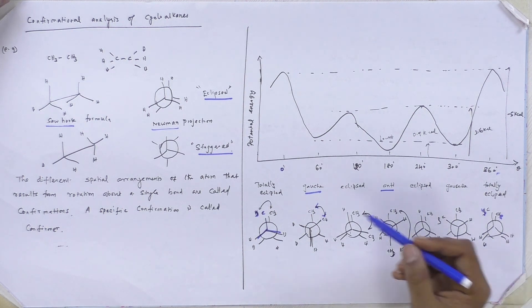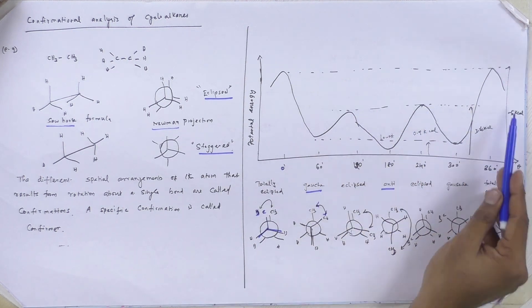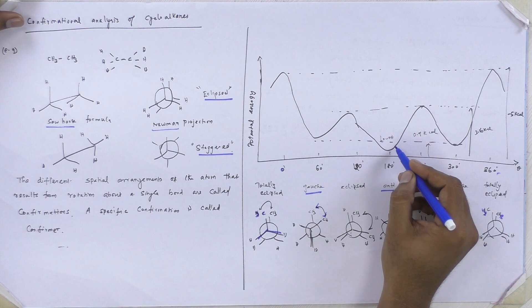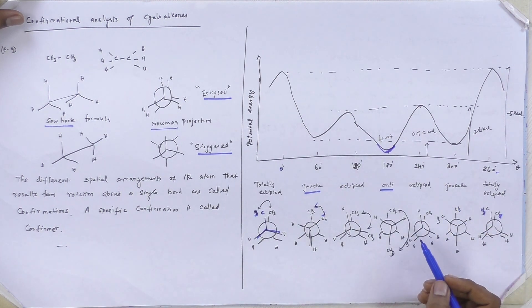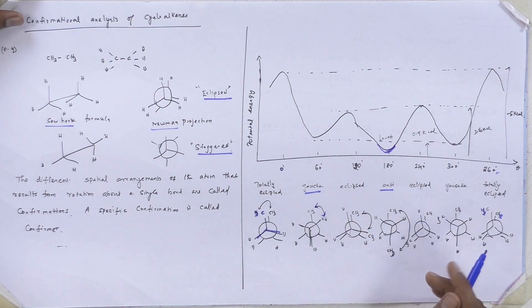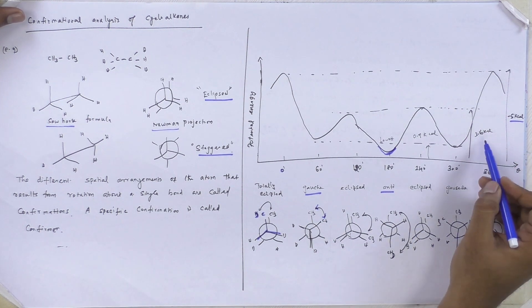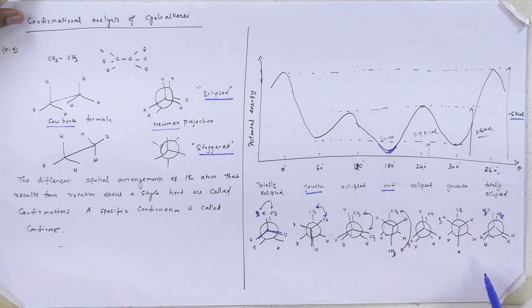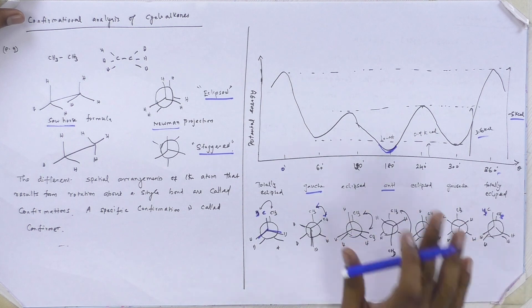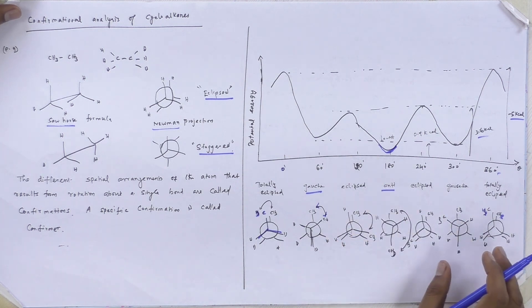Of these conformations, the eclipsed form has the most energy, the gauche form has less energy, and the anti form has the very least energy. From this diagram, we can understand the potential energies of cyclobutane in different conformations. The corresponding energy values are given here. We rotate 60 degrees at a time from eclipsed to eclipsed, completing 360 degrees. This is the potential energy diagram of the conformational analysis of cyclobutane. Thank you.